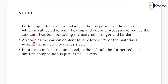As soon as the carbon content falls below 2.1% of the material weight, the material becomes steel. In order to make structural steel, carbon should be further reduced until its composition is just 0.05% to 0.25%.